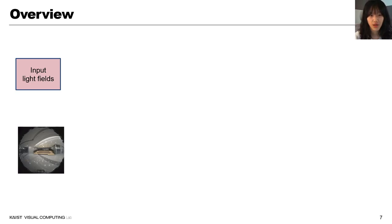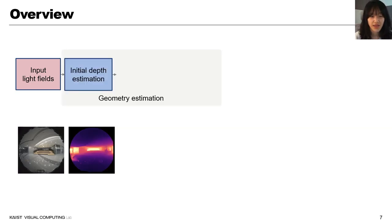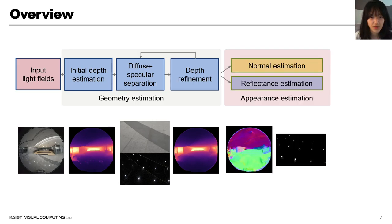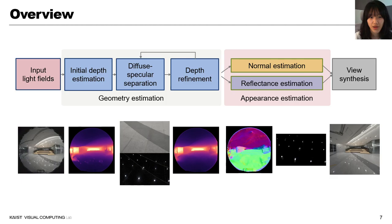First, we capture light fields and estimate the geometry. Initial depth is refined iteratively using diffuse specular separation. Then, the appearance is estimated by optimizing normal and reflectance, finally conducting view synthesis.